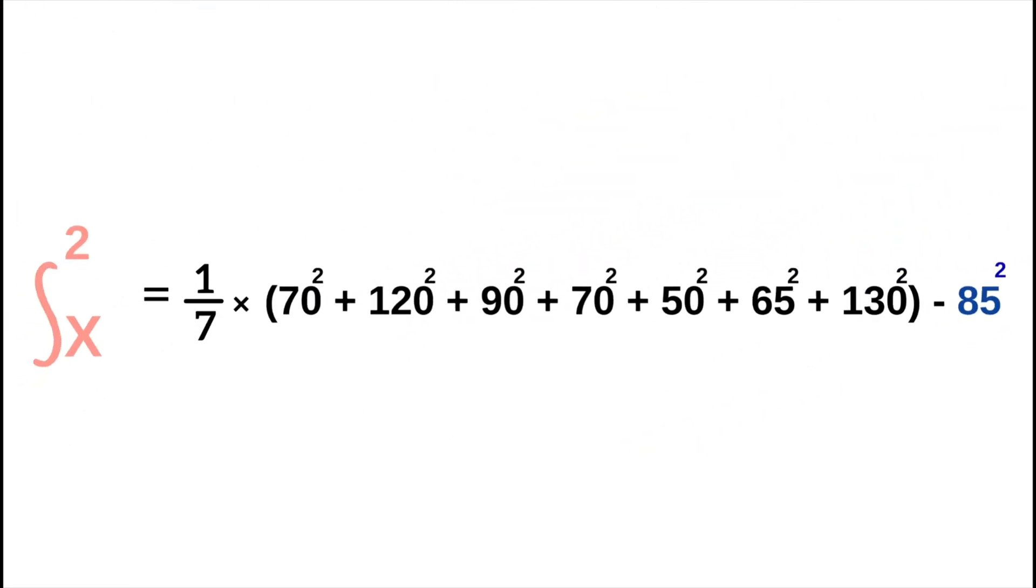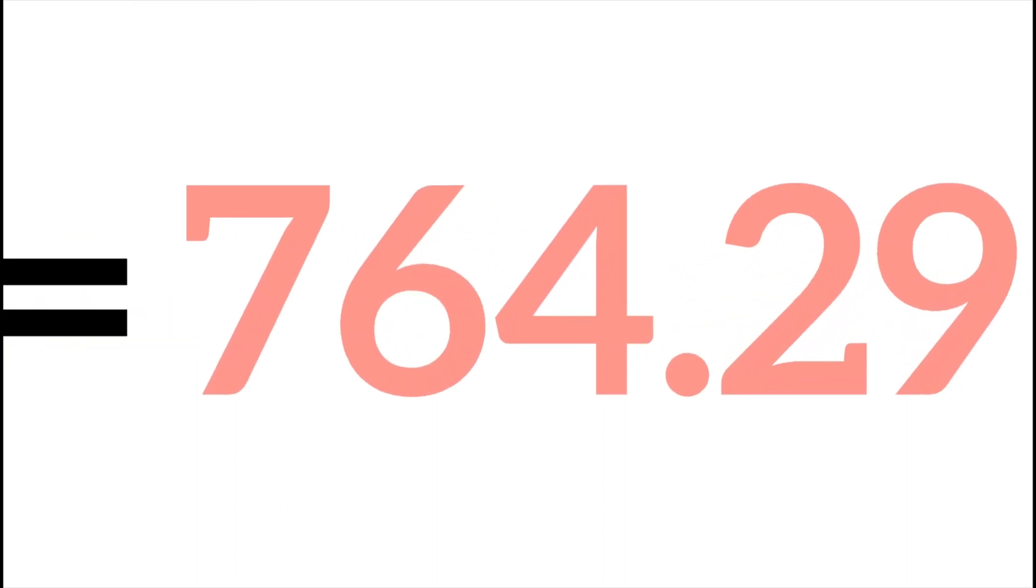You again calculate 1 divided by 7 multiplied by the directly squared prices, and then subtract the square of the mean from this result. Of course, we arrive at the same result of 764.29.